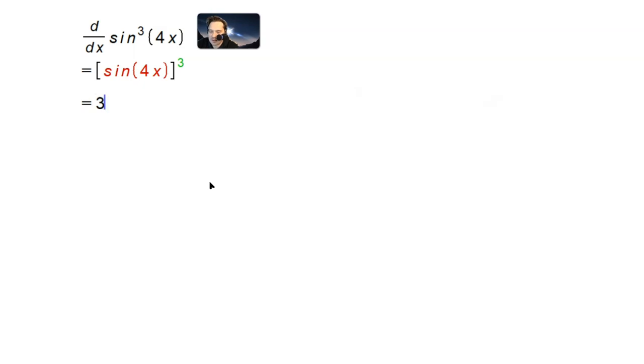So by the power rule, you bring the 3 down and then you copy the inside, which is sin(4x). And then here you do 3 minus 1. But then you have to multiply by the derivative of the inside, which is the derivative of sin(4x).